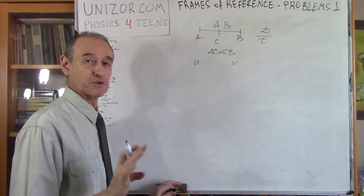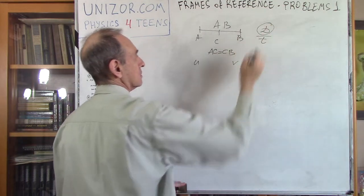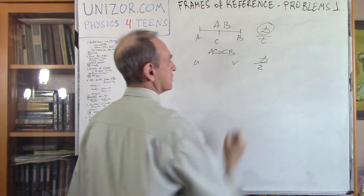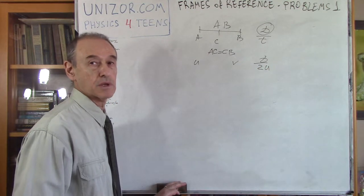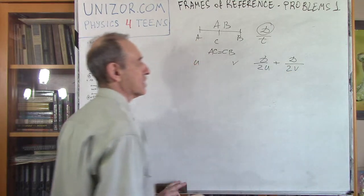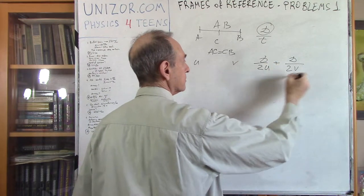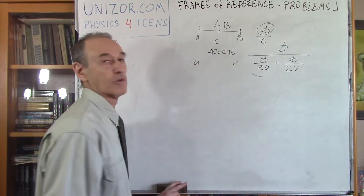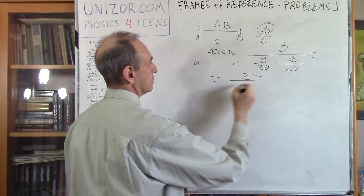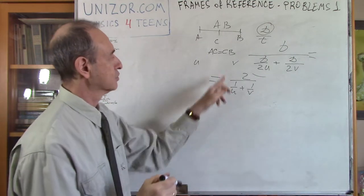If you think it's U plus V divided by 2, you're wrong. It's total distance divided by total time. The total time is (D/2)/U plus (D/2)/V. Dividing the total distance D by this total time, D cancels out, leaving 2 divided by (1/U plus 1/V), which simplifies to 2UV divided by (U plus V). This is what's called the harmonic mean of two numbers: invert each, average them, then invert again.